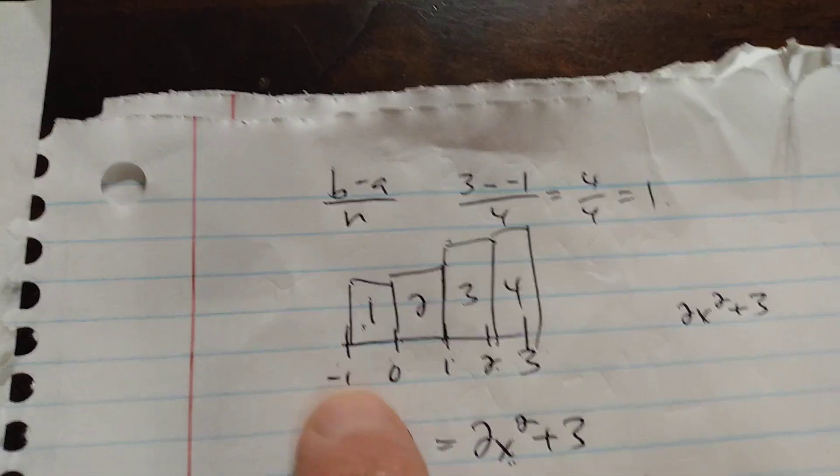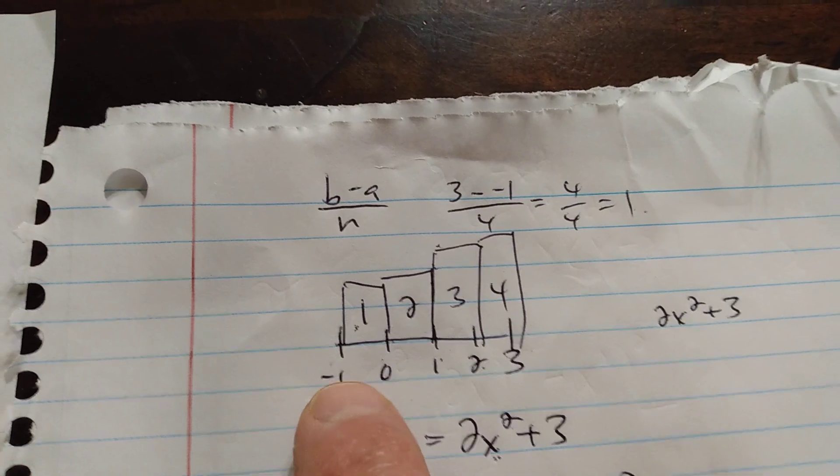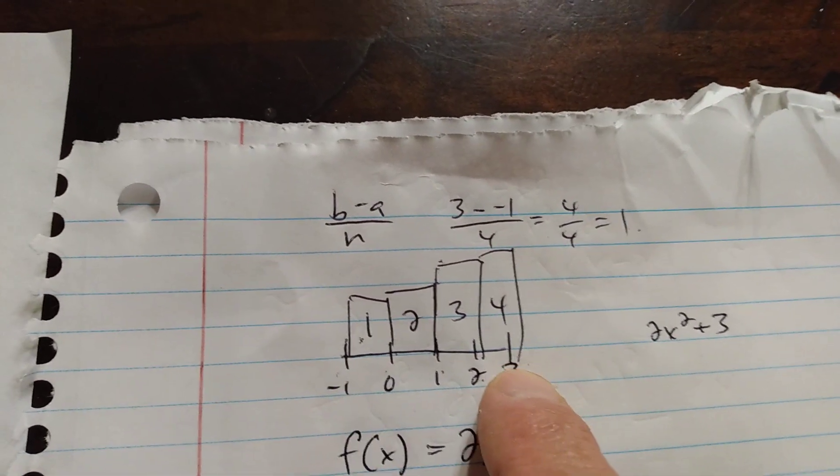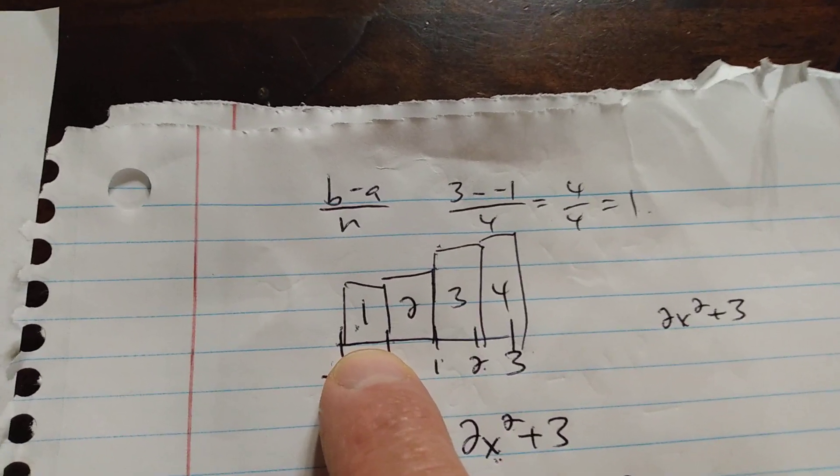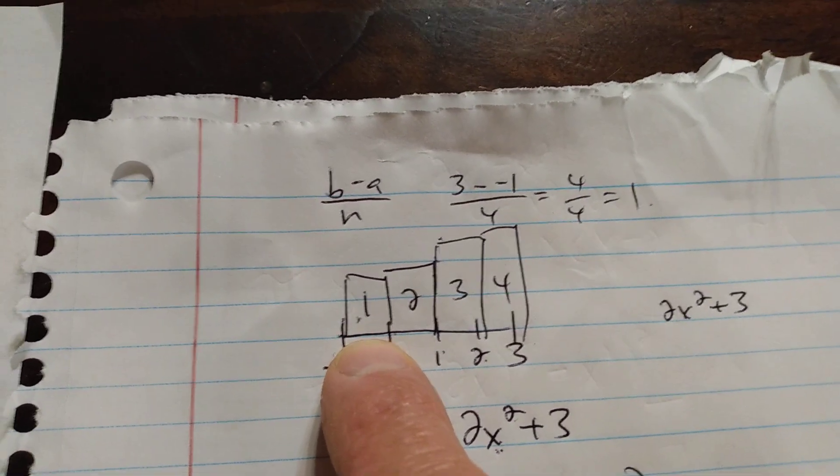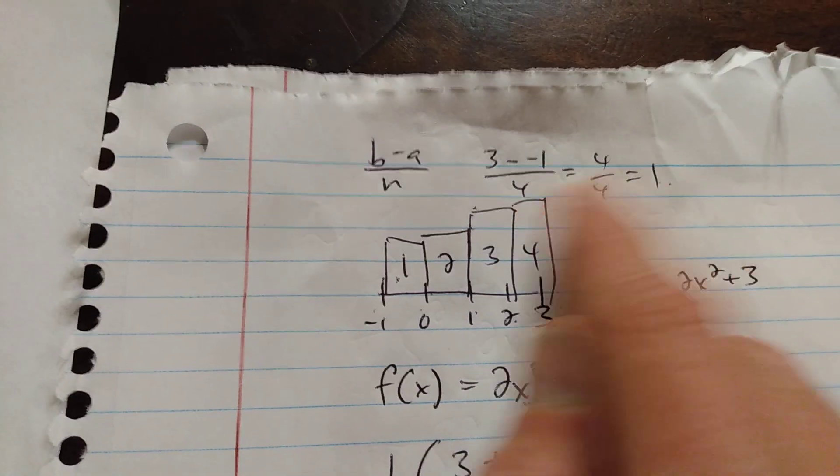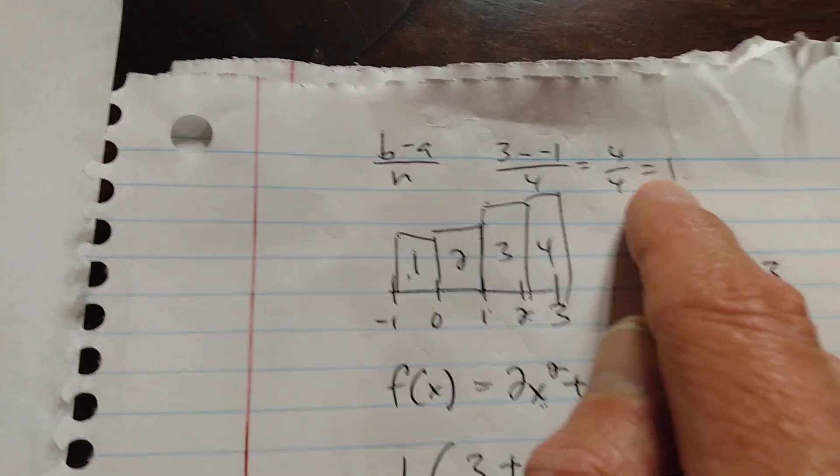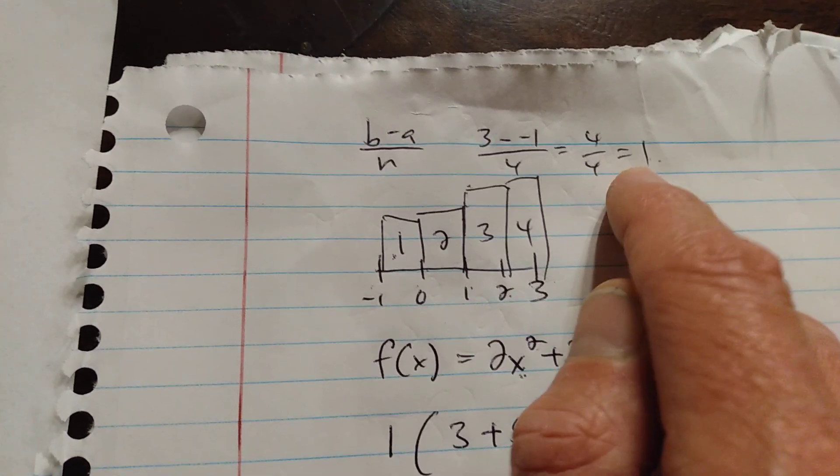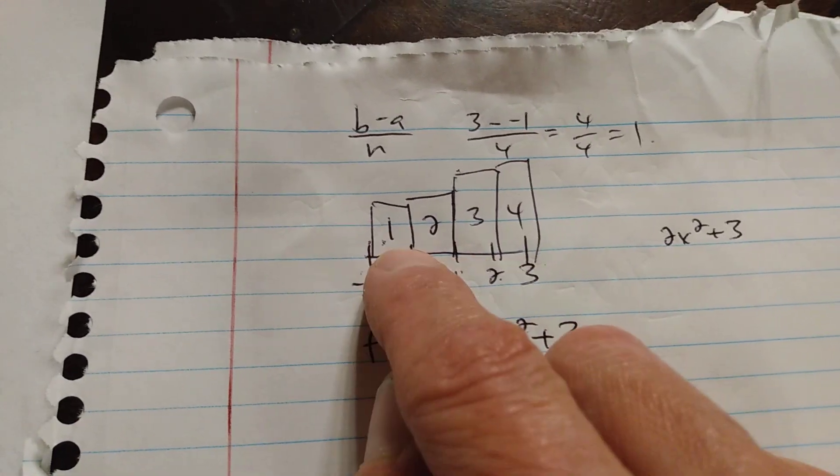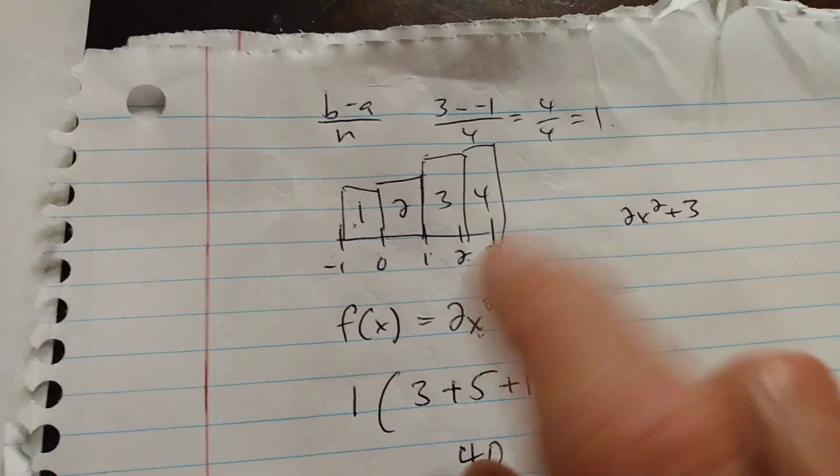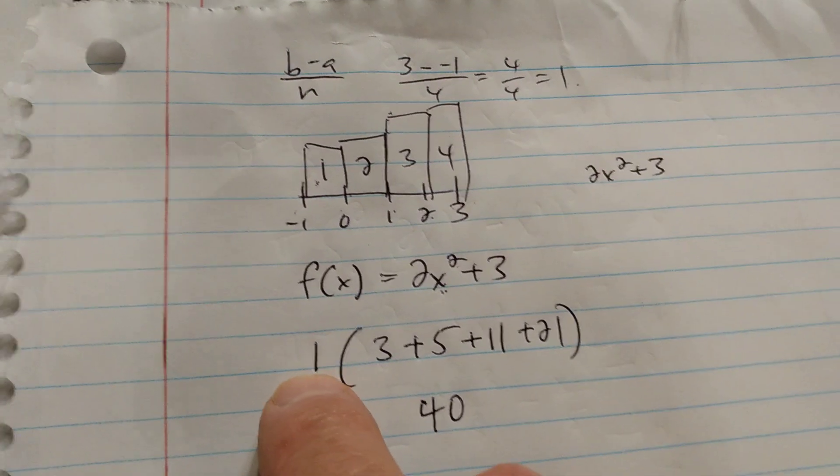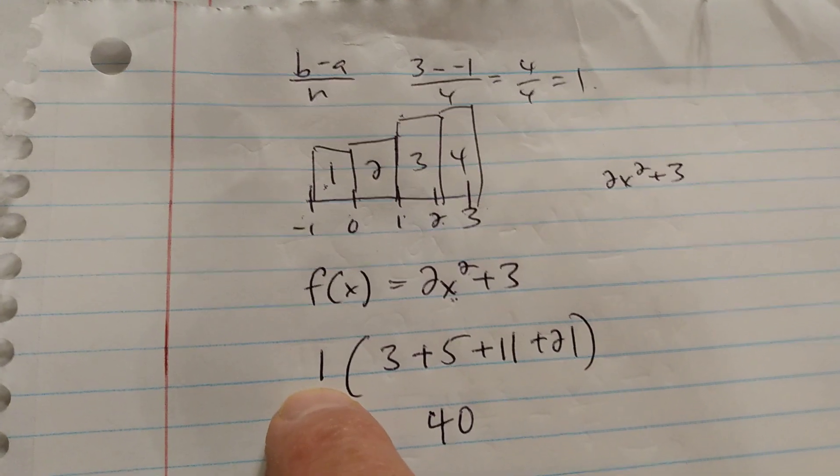So you're going from negative 1 to 3, you have 4 rectangles, so the base of all your rectangles is 1. So when it's consistent, it's the same, it's not varying. A lot of times, Riemann Sums have different bases. You do each rectangle individually, just base times height. But in this case, if it's consistent, it's the same base, you could just tag it out front.